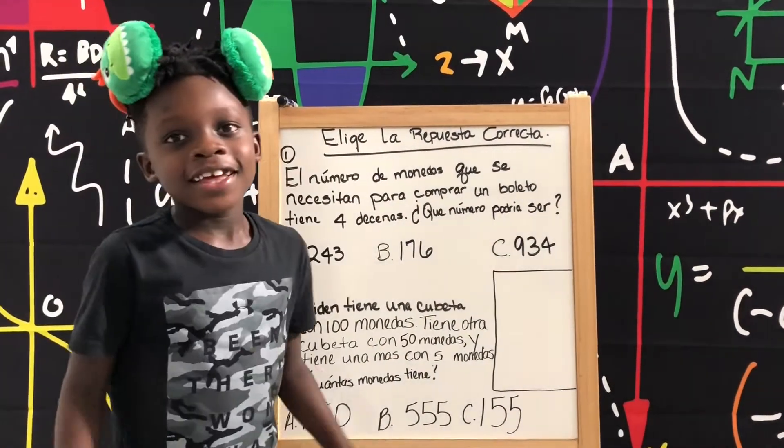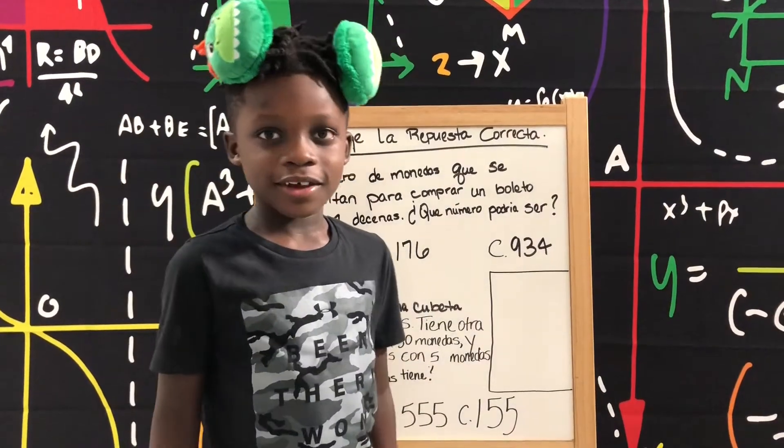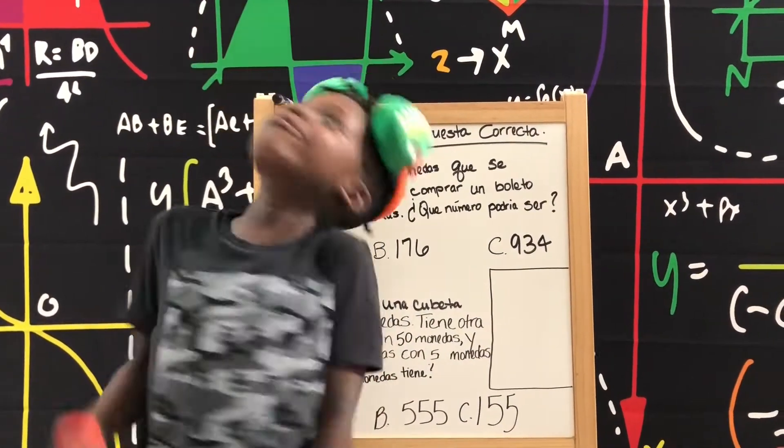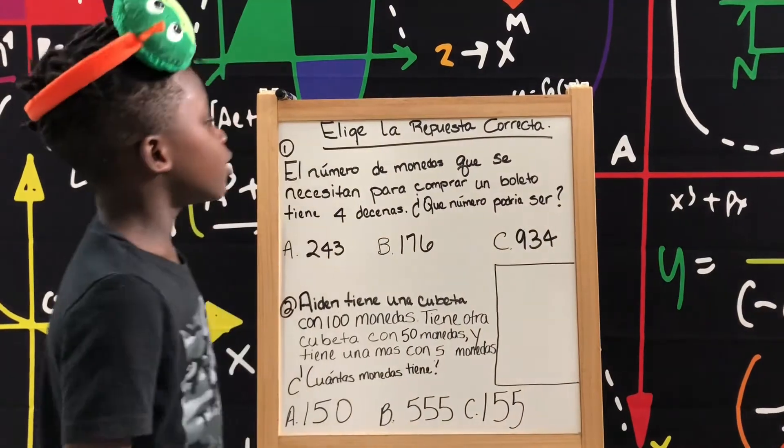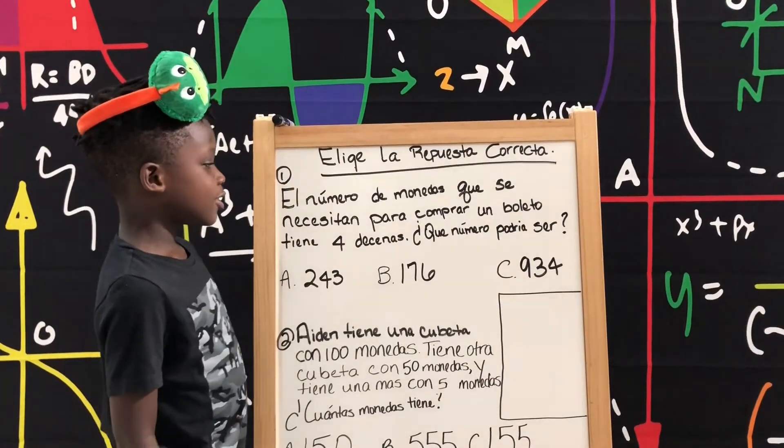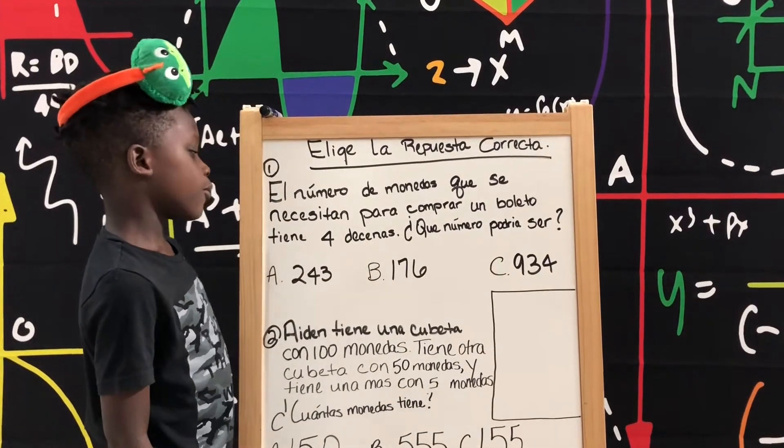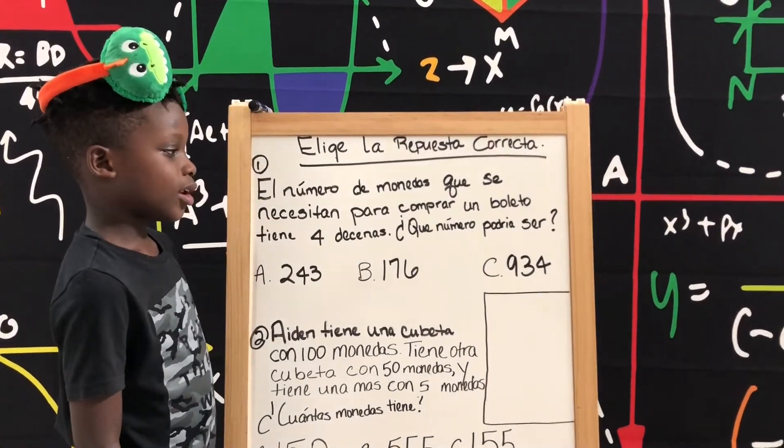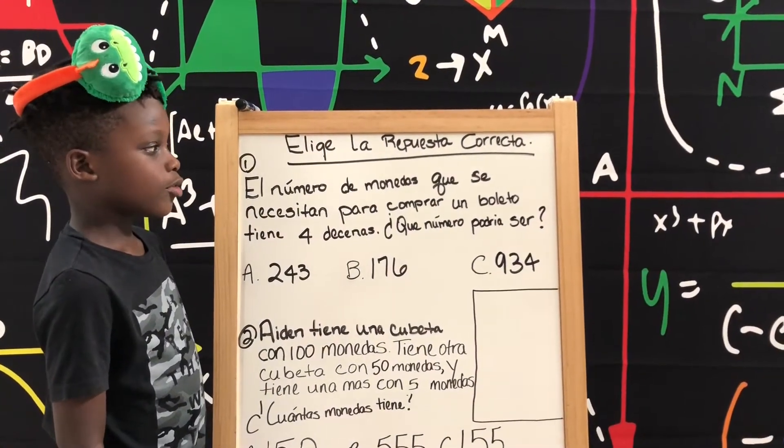Entonces, vamos a elige la respuesta correcta. El número de monedas que se necesitan para comprar un boleto tiene cuatro decenas. Y el número podría ser...